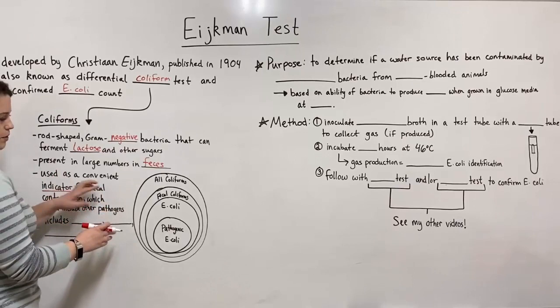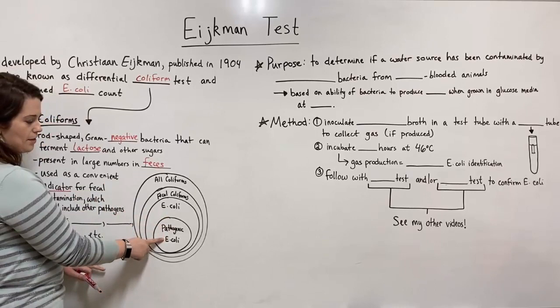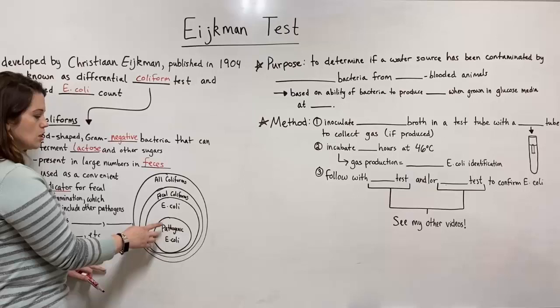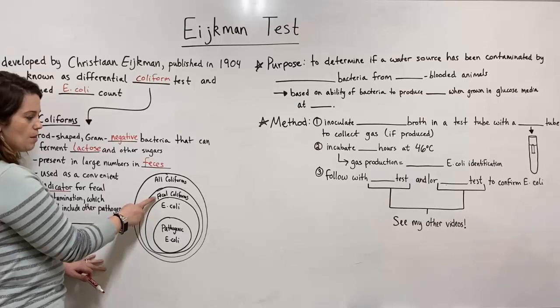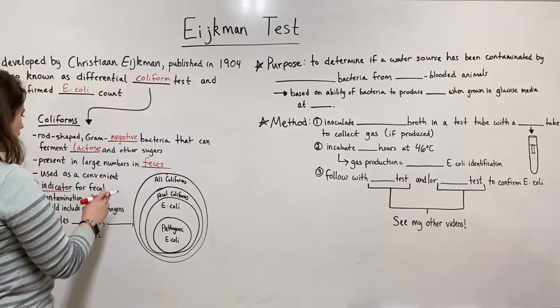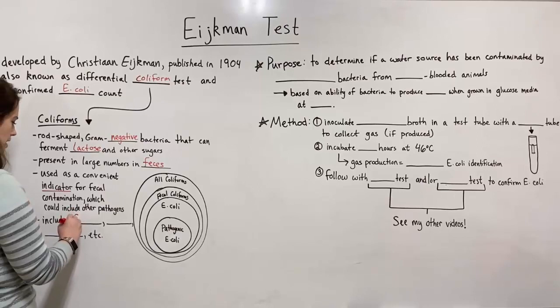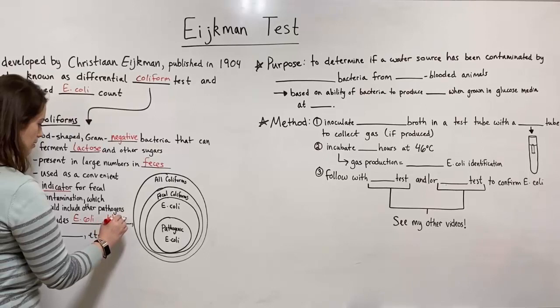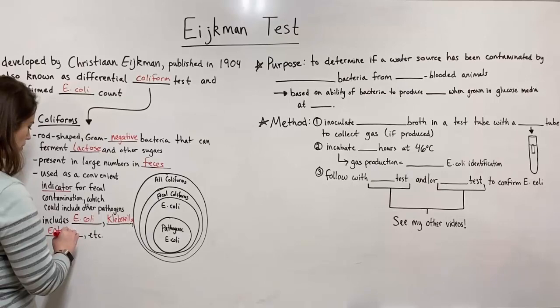To put this in perspective — some E. coli is pathogenic, but certainly not all E. coli. There's plenty of E. coli that does not cause any disease. E. coli are a type of fecal coliform, but there are other types of fecal coliforms as well. And of course, there are also coliforms that are not fecal — not present in feces. When we're talking about fecal contamination, we're usually thinking of things like E. coli, Klebsiella, and Enterobacter. So these would be three major examples of fecal coliforms.